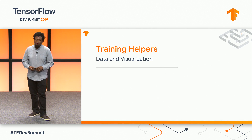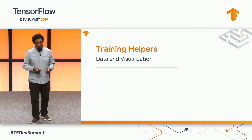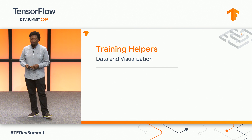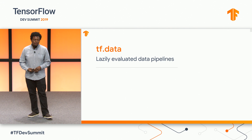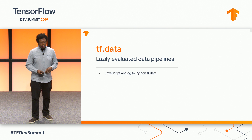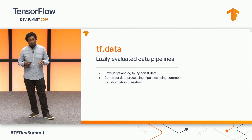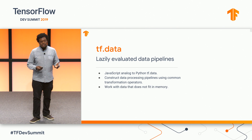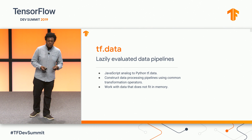Over the past year, we've heard feedback from the community on ways to improve the training experience with TensorFlow.js. Two particularly requested areas are data management and data visualization. First up is TFData, an API for managing data pipelines to drive training. It's a JavaScript analog to Python's tf.data, provides a whole set of utility functions for dataset transformation, and works with streams. The lazy evaluation allows you to work with data that doesn't fit in memory, which can be quite important.